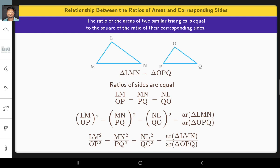This is equal to area of triangle LMN by area of triangle OPQ. Tap the buttons to understand this better with more examples.